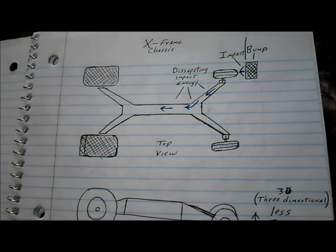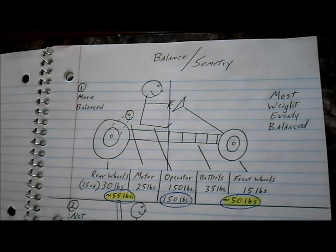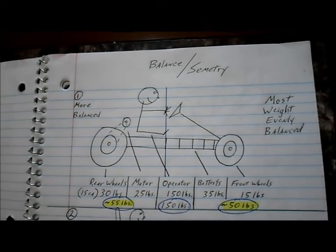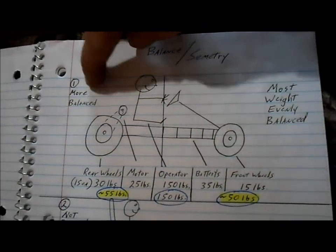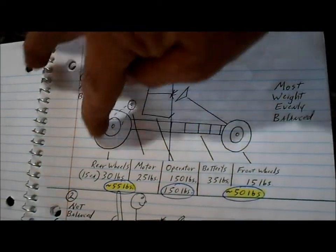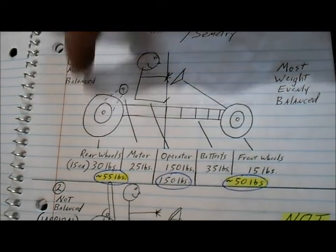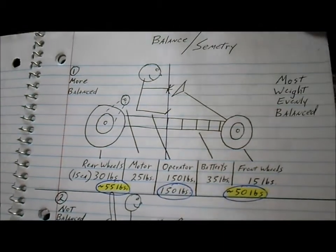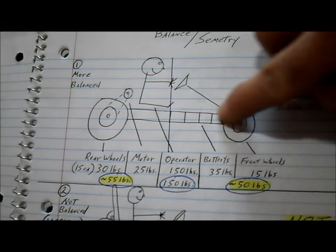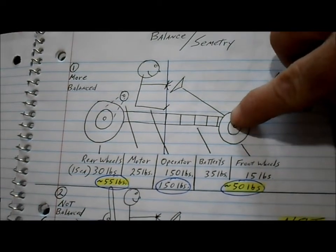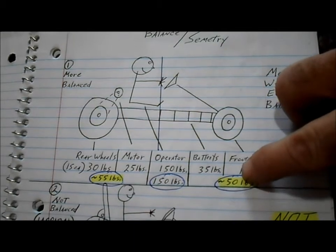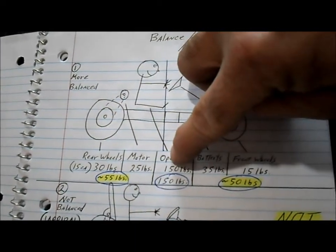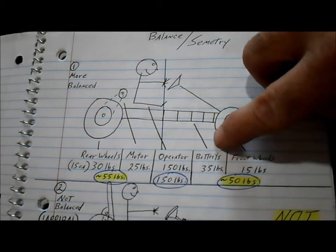Another thing you have to keep in mind is the balance and even the symmetry of a cart. In this concept we would have the motor and the wheels in the back which would represent a little over 50 pounds. The operator, which we're going to go with 150 pounds in the middle, then you'd have the battery spread out in front of the operator and then the front wheels which would be around another 50 pounds. So we got 50 pounds in the rear, 150 pounds in the middle, and then 50 pounds in the front, so that's pretty well balanced out.